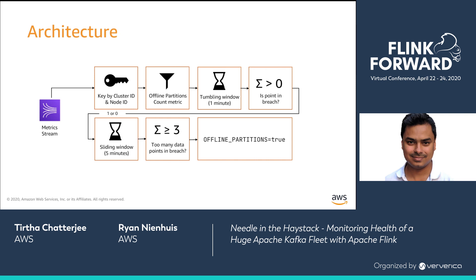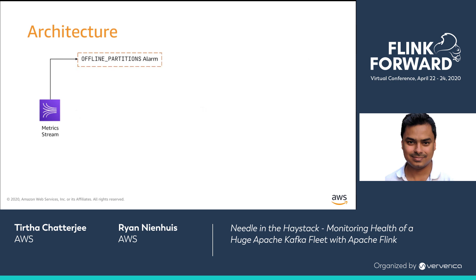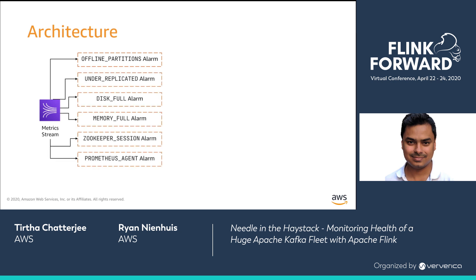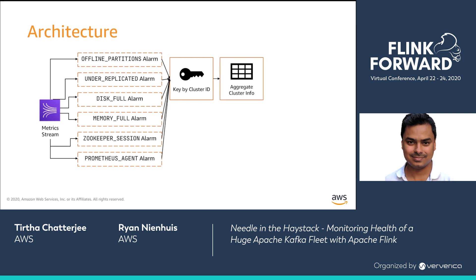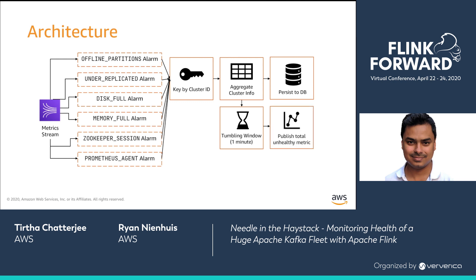We store the boolean value of whether the alarm is in breach along with the cluster ID and node ID in a Flink tuple and pass it downstream. We have described the operators that determine the value of the offline partitions alarm. There are other alarms just like this one, looking at different metrics and potentially having different criteria. We key all tuples output by these alarms by their cluster ID, aggregate all the alarm information for different nodes of the cluster into one object, then persist this cluster health information into a database. We consider a cluster to be unhealthy if it has some nodes in any kind of alarm, and finally aggregate the number of unhealthy clusters using a tumbling window and publish this as a metric.